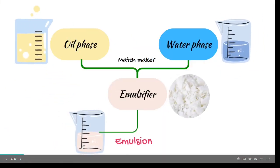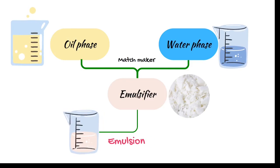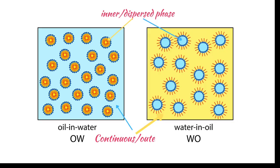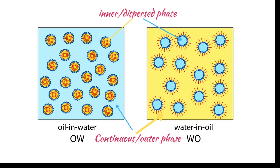With an emulsion we usually have two immiscible phases: an oil phase and a water phase, and a matchmaker which is the emulsifier that helps us bring these two phases together in a metastable product. We are talking about the two basic forms of emulsion — we will not go into complex emulsion forms or nano emulsions — we are talking about oil-in-water and water-in-oil emulsions.